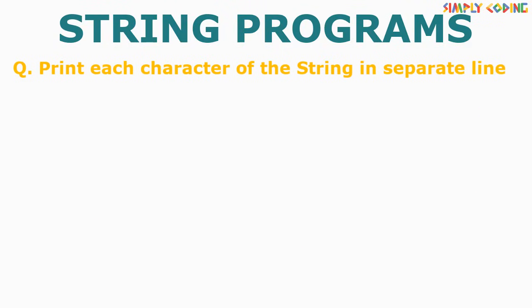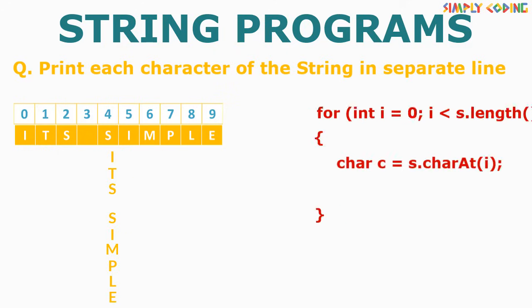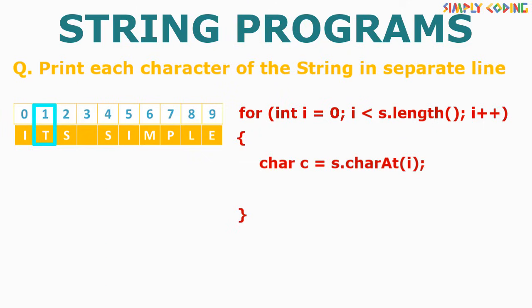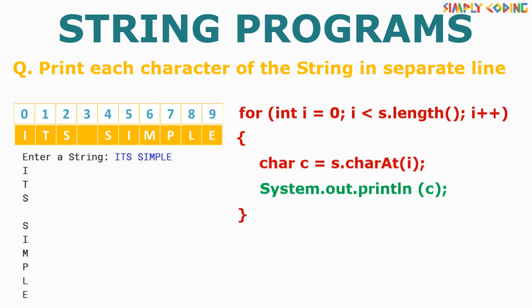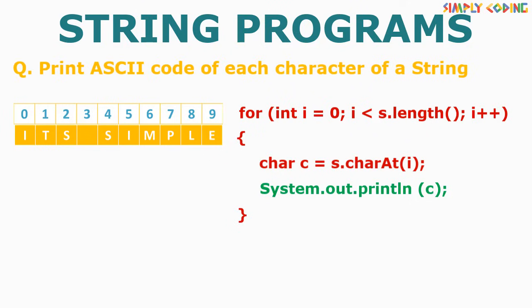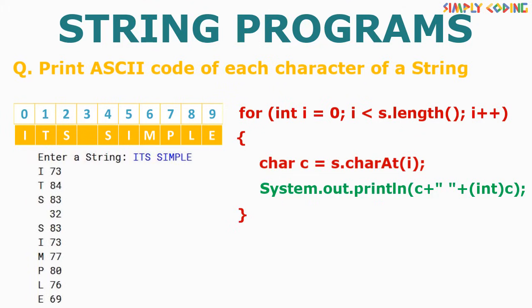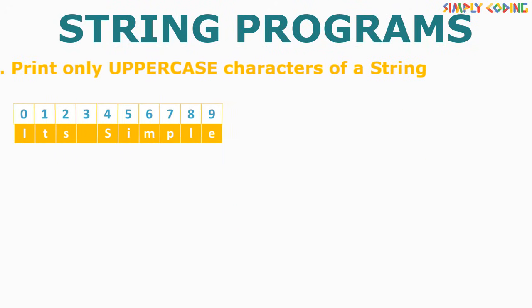The first program is to take a string and print each character on a separate line. We take our traversal template — it is already traversing the string and giving us each character — so we just add a print statement to print c. For printing each character with its ASCII code, in the print statement we add a typecast of c to int, which gives its ASCII code.